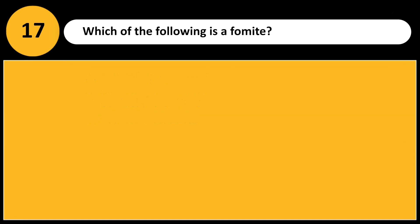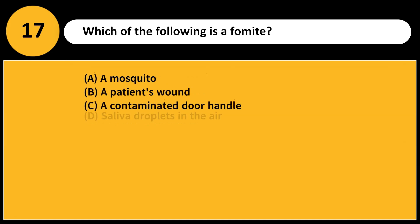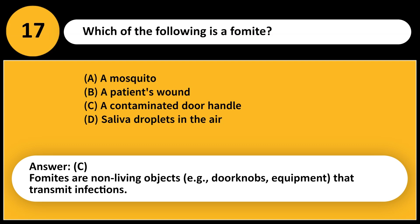Which of the following is a fomite? A. A mosquito. B. A patient's wound. C. A contaminated door handle. D. Saliva droplets in the air. Answer: C. Fomites are non-living objects — e.g., doorknobs, equipment — that transmit infections.